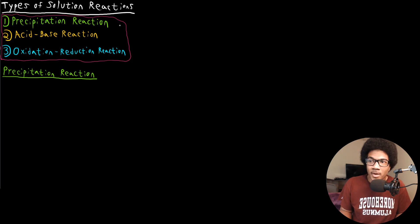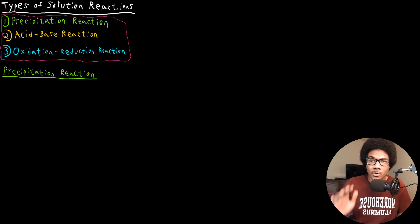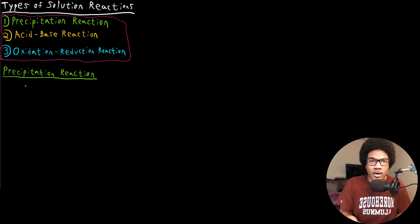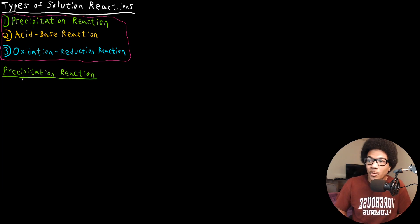The three broad categories are precipitation reactions, acid-base reactions, and oxidation-reduction reactions. What I want to do in this video is go through each of these classes of reactions so that you're familiar with what occurs in them, and how we classify each of these chemical reactions.